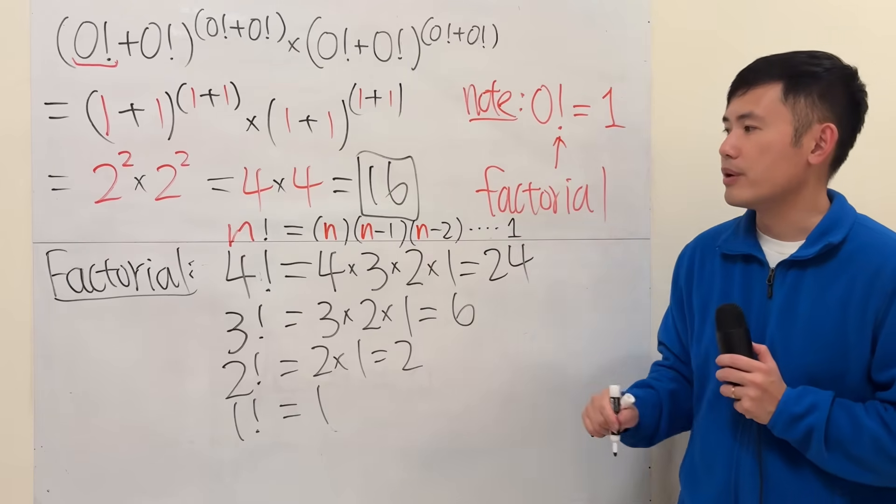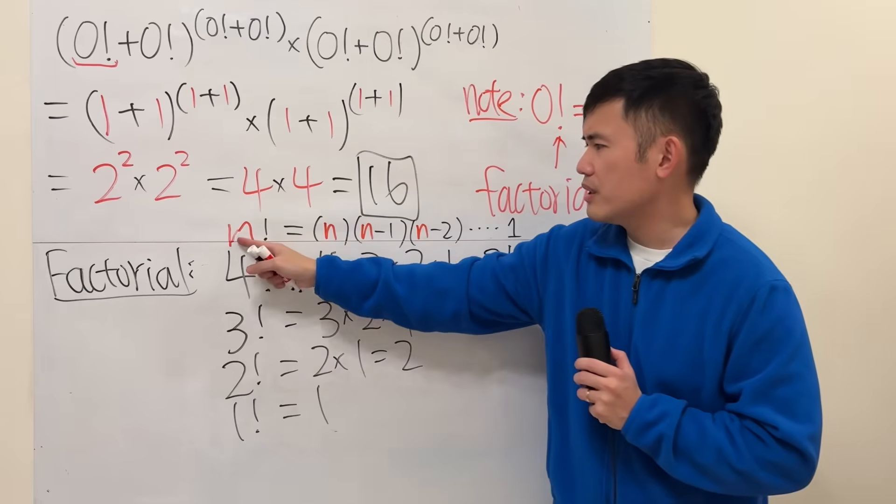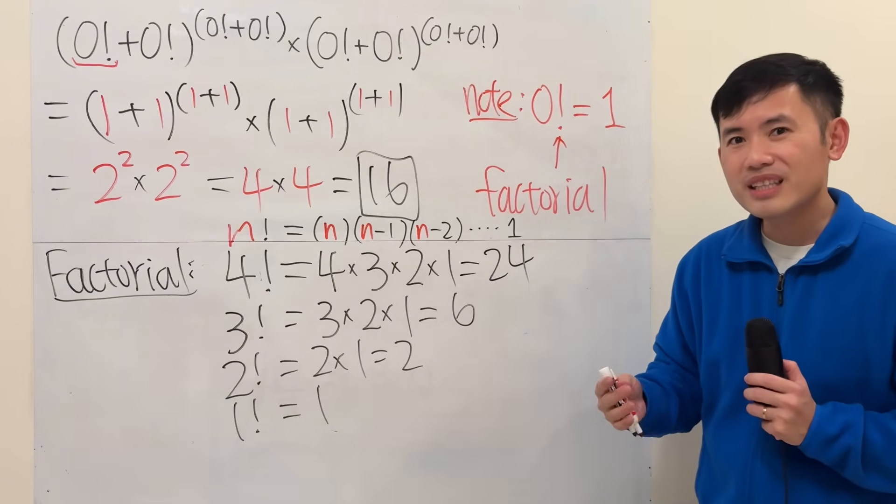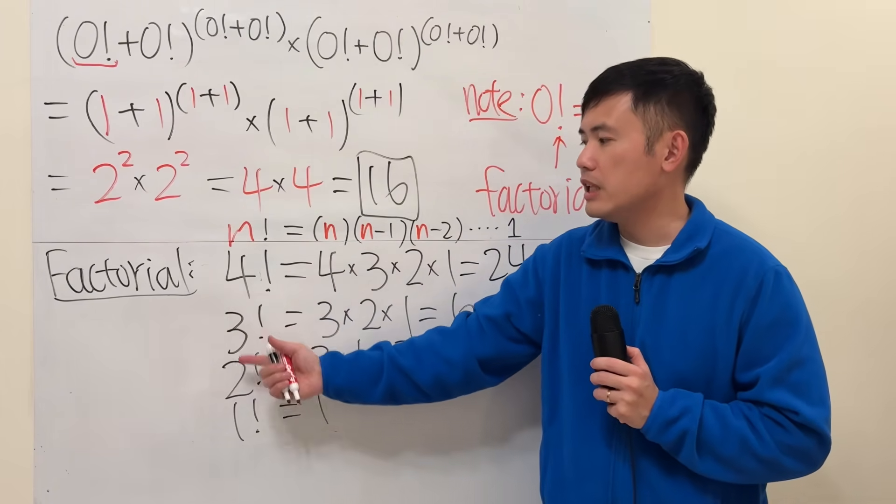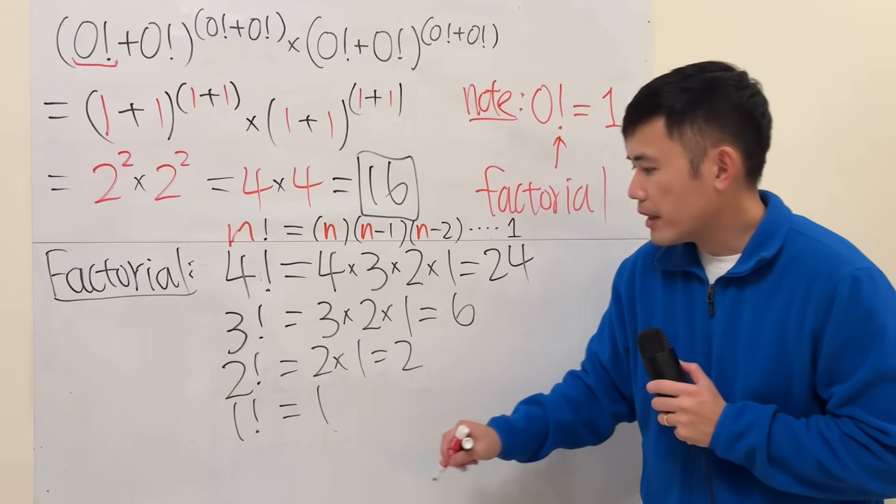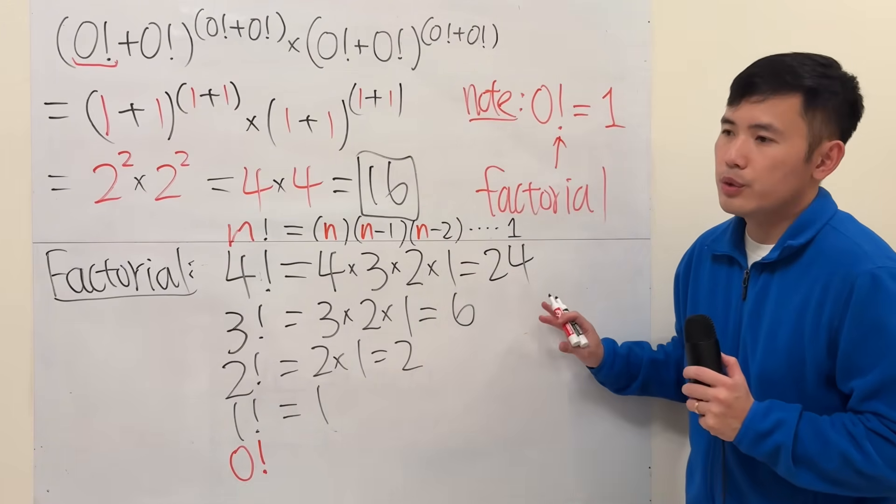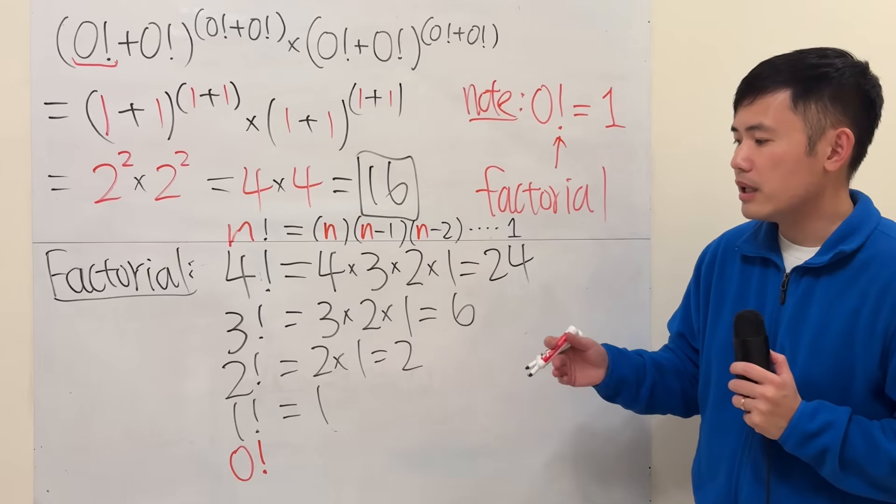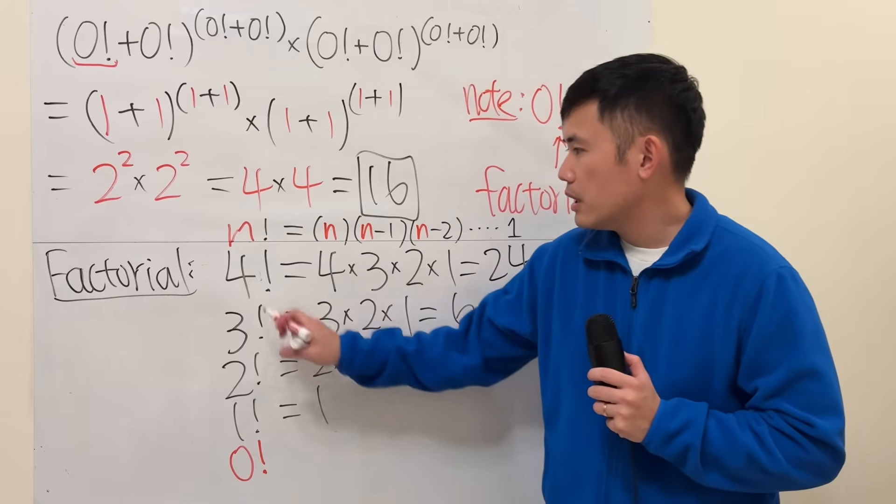But we have zero though. If I put zero in here, don't I just have zero? No, zero is a special case. This definition only works for positive whole numbers. Now we look at the zero factorial. Here's the reason why we're going to do the following definition.